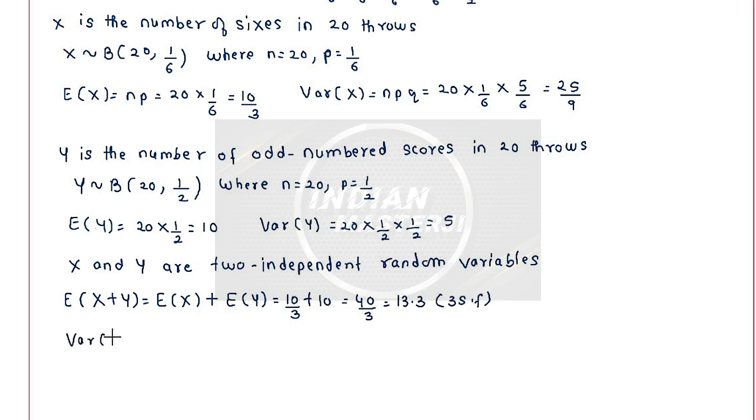Now variance of X plus Y will be 1 square into variance of X plus 1 square into variance of Y. Variance directly gets added up. So we get this as variance of X is 25 by 9 and variance of Y is 5. So we get this as 45 plus 25 is 70, so we get this as 70 by 9.